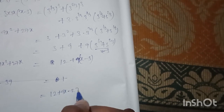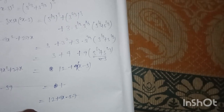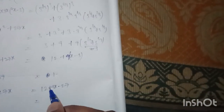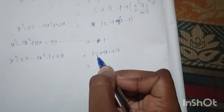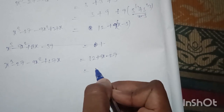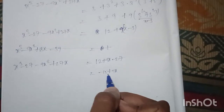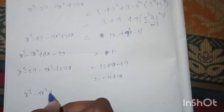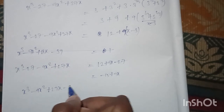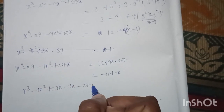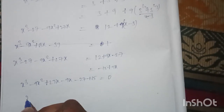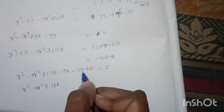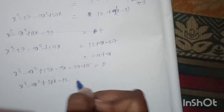So we have x³ - 27 - 9x² + 27x = 9x - 15. Sending all RHS terms to the LHS: 27x - 9x gives 18x; -27 + 15 gives -12. So the polynomial is x³ - 9x² + 18x - 12 = 0.